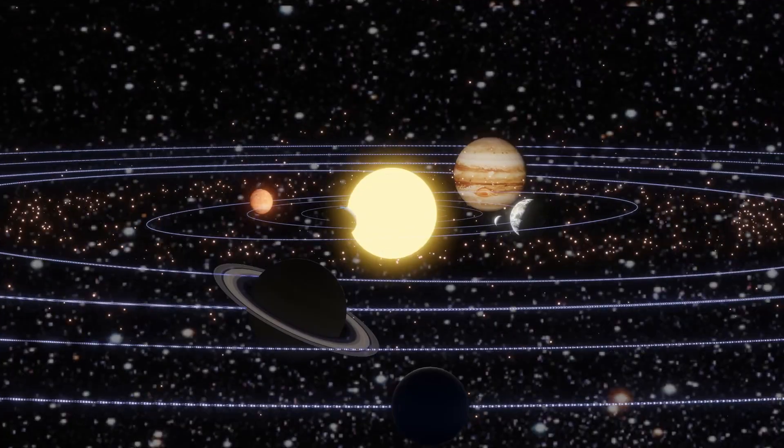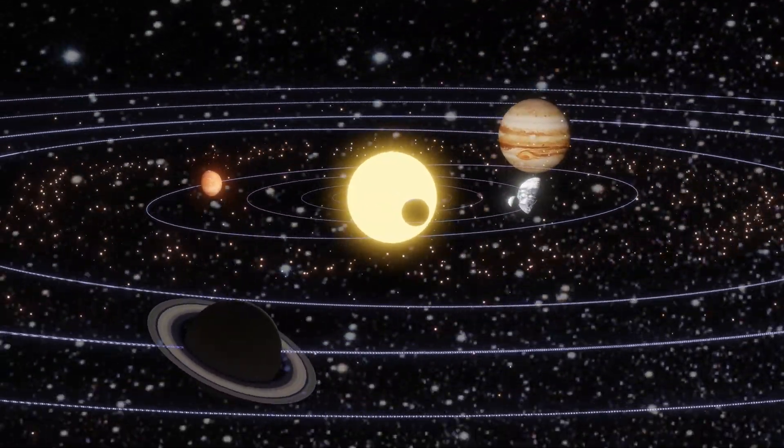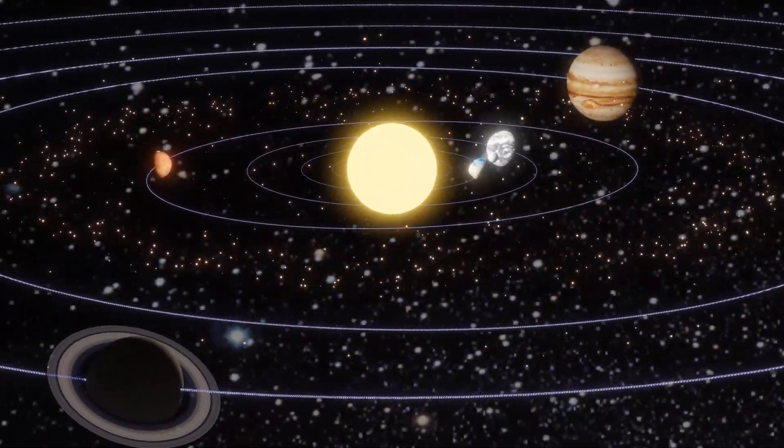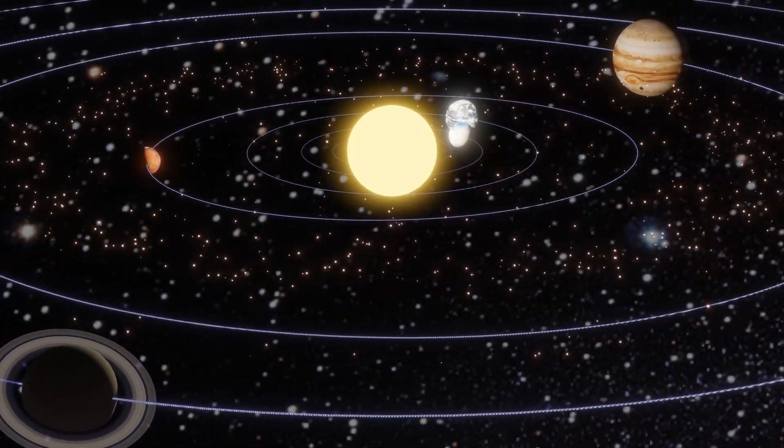The planets, dwarf planets, and other objects in the solar system orbit around the sun in elliptical paths, following the laws of gravity.